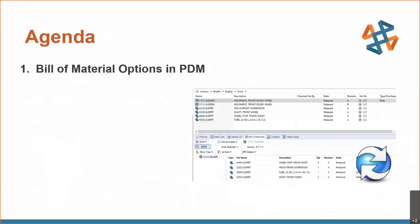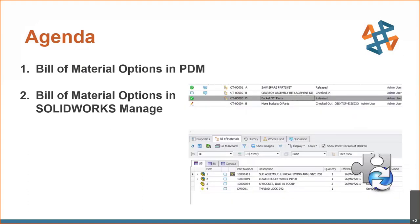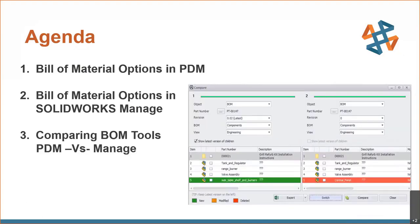We're going to start out in the bill of material options inside of PDM. We'll do a couple slides about PDM Standard, a couple things about PDM Pro, and then we'll actually go in and take a look at the SOLIDWORKS Managed bill of material options. We'll dig into the PLM-like features in SOLIDWORKS Managed. If we have time, I'll go over the BOM tools in each option, and I want to leave some time for questions at the end.